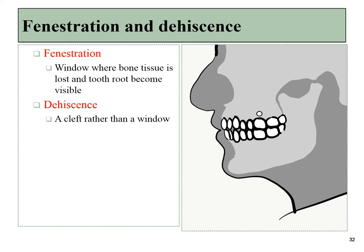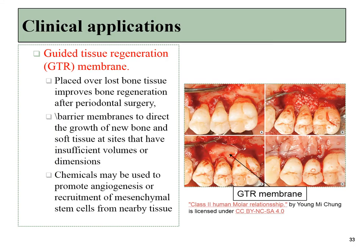If we lose a little bit too much bone tissue, it could leave behind a window making the root visible from the gum line — this is called a fenestration. If that is a cleft rather than more of a circle, we call it a dehiscence. To repair this, we need to repair the bone tissue, which might involve adding extracellular matrix from cadaver bone placed over the region where bone was lost. Chemicals might be added to help induce mesenchymal stem cells to migrate into that scaffolding and replace the cadaver bone with healthy bone tissue made by the patient's own cells.